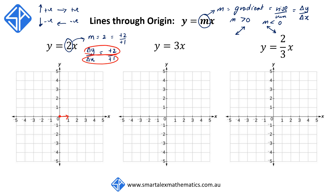Then we're going to move up vertically — our rise — by plus 2. That gives us the next point on the line. We then join up these two points to get the graph y is equal to 2x.